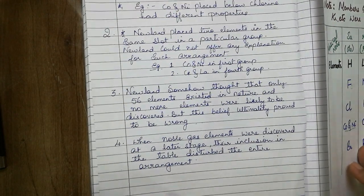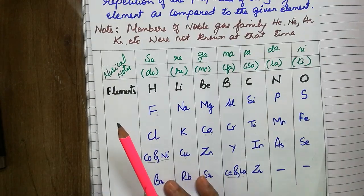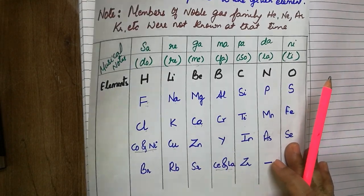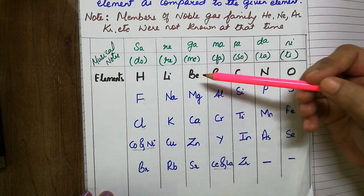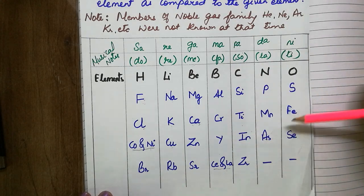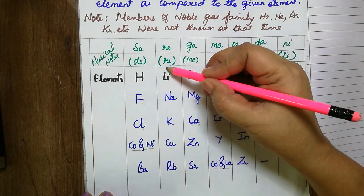So you all need to note that limitations are more important for Newland's Law of Octaves. One more question might be asked: can you recognize, can you identify Dobriner triad existed in Newland's Law of Octaves? In this table, can you find out the triad? Yes, we can find here.